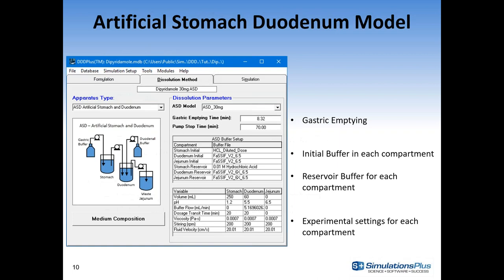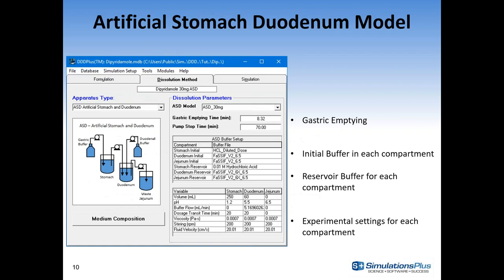The first new feature is the artificial stomach duodenum model. In the apparatus type drop-down, you can now select the ASD model. It allows you to model a three-compartment ASD, similar to literature experiments published by Pfizer, Lilly, and the University of Michigan. You have an initial drug dose to the stomach, drug emptied at the gastric emptying rate into the duodenum volume held constant, and a pump that automatically adjusts to maintain that constant volume. The waste compartment collects buffer flows from the upper compartments.